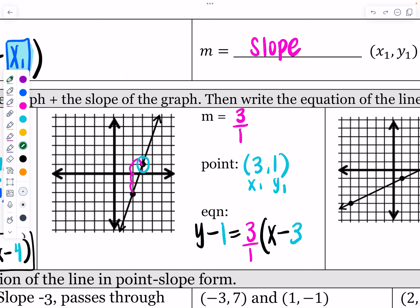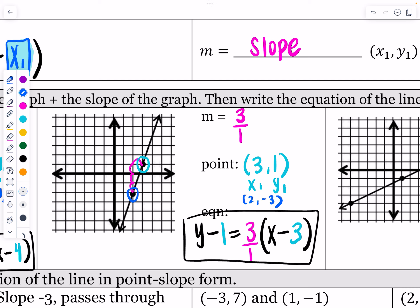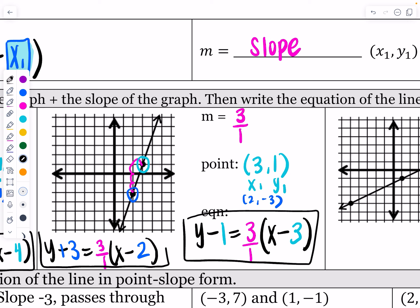If you're not in class, another thing you could do — you could use the other point (2, negative 3). With that point you'd get y minus negative 3, which becomes y plus 3, equals 3 over 1 times (x minus 2). Notice the slope stays the same every time — the only thing that's changing is the point on the line.